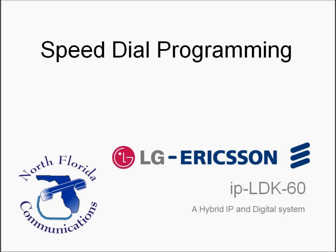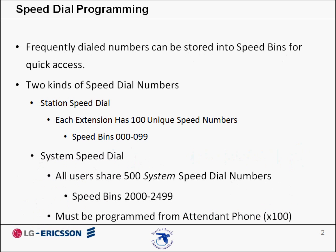Frequently dialed numbers can be stored into speed bins for quick access. There are two different kinds of speed dial numbers: station speed numbers and system speed numbers. Each extension has its own set of 100 speed numbers which are not shared with other users. These are called station speed dial numbers.